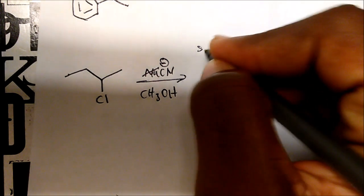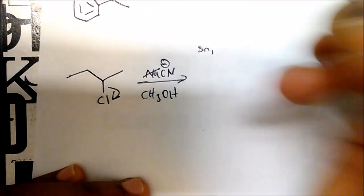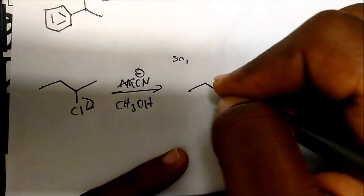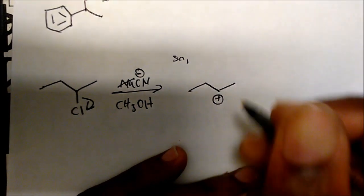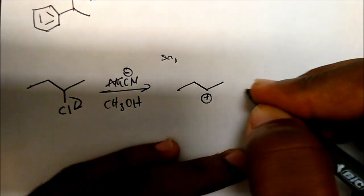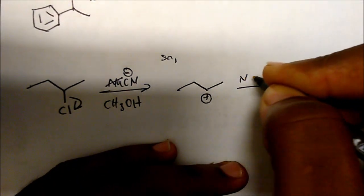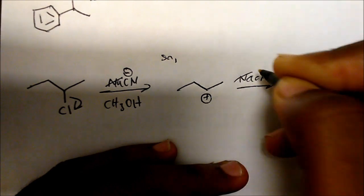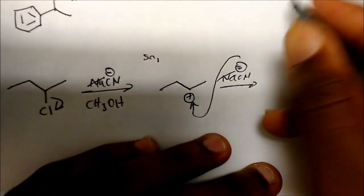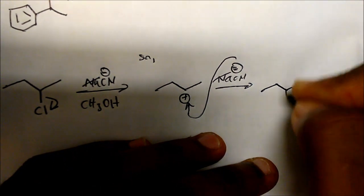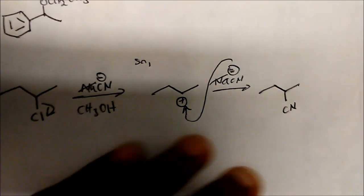This is a prime SN1 reaction. The chlorine has to leave first; we form a plus charge in a secondary carbocation. Now the cyanide anion — the nucleophilic carbon comes and attacks, and we get a neutral product.